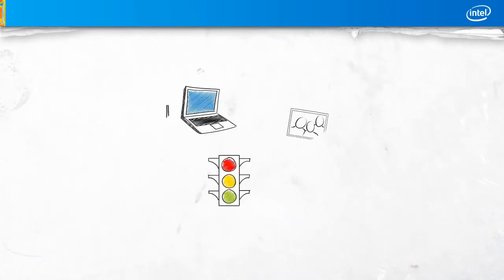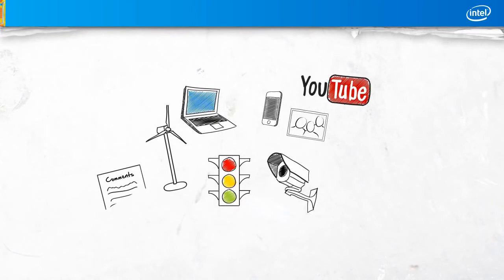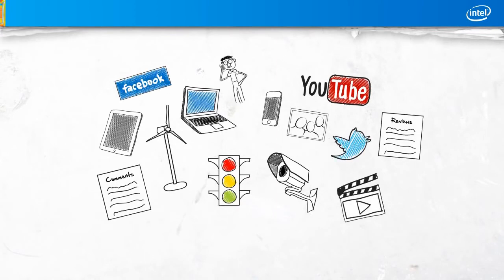One of the big reasons the data is getting bigger is that it's continuously being generated from more sources and more devices. And much of that data, like videos, photos, comments in social media forums, reviews on websites, and so on, is unstructured.